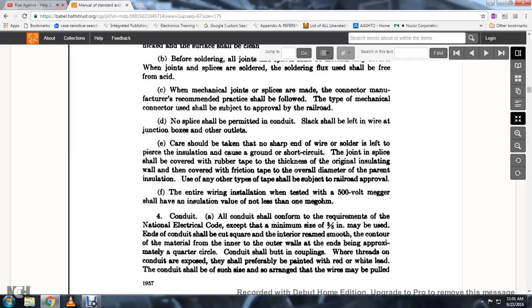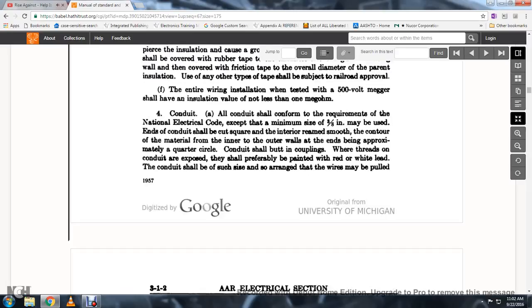Care shall be taken with non-sharp wire and solder to prevent insulation damage that could cause grounding or short circuits. Joints and splices shall be covered with rubber tape to the thickness of the original insulating wall and covered with friction tape. The overall diameter and type of tape shall be subject to railroad approval. The entire wire installation shall be tested with a 500 volt megger and shall have insulation value not less than one megohm.